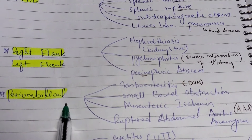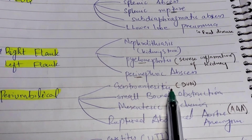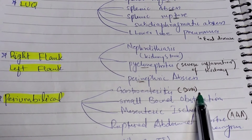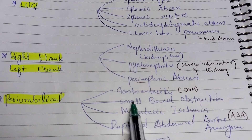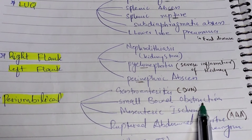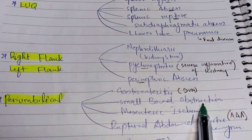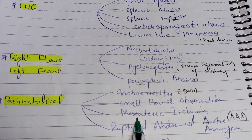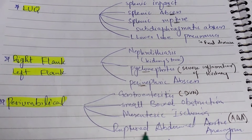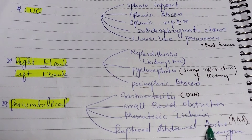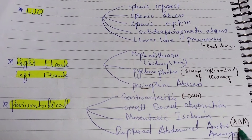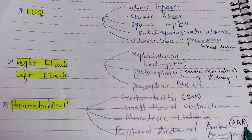In the peri-umbilical region, the differentials include gastroenteritis — in which the patient experiences diarrhea, vomiting, and nausea — small bowel obstruction, mesenteric ischemia, and ruptured abdominal aortic aneurysm, also known as triple A.